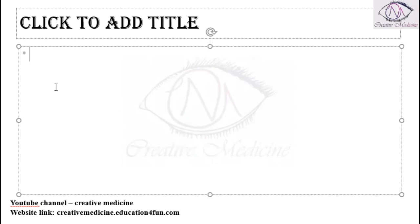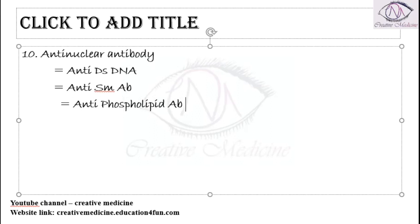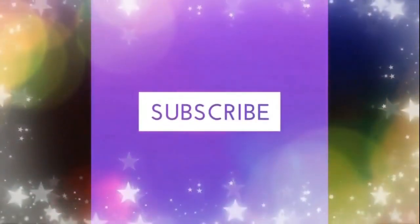The tenth criterion is the presence of antinuclear antibodies. The important ones are anti-double-stranded DNA antibody, anti-Smith antibody, or anti-phospholipid antibody. These are the 10 criteria for systemic lupus erythematosus — if at least 4 or more features are positive, the diagnosis is SLE. Thank you for watching.